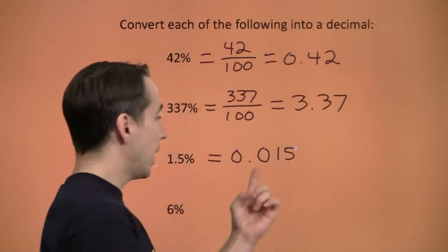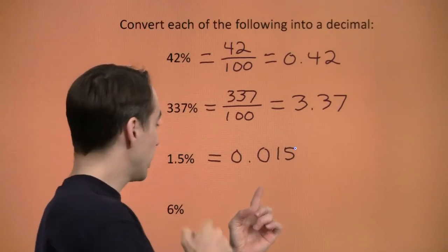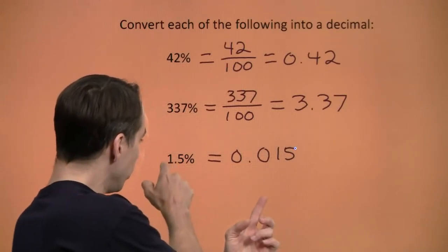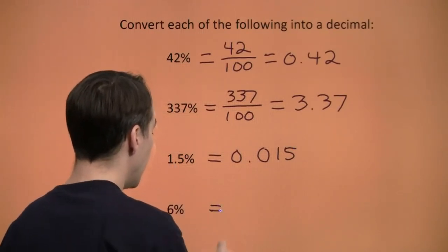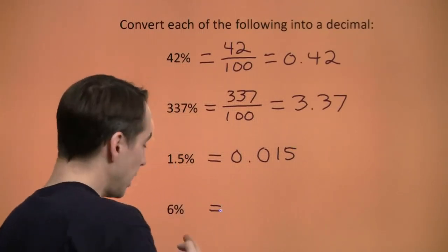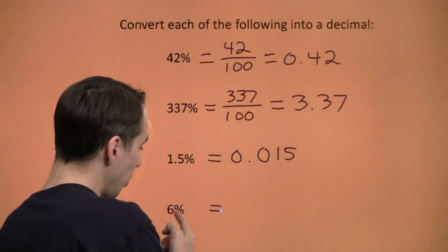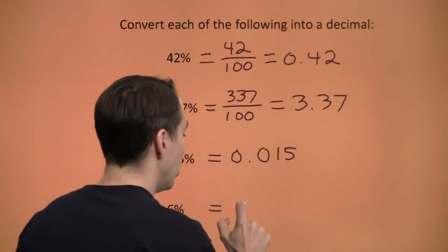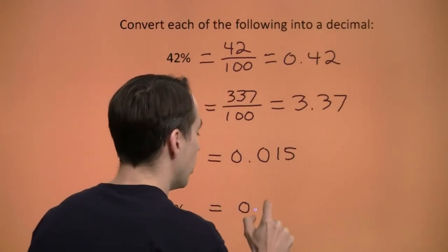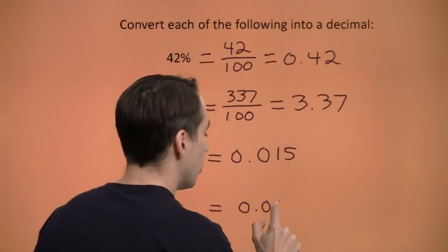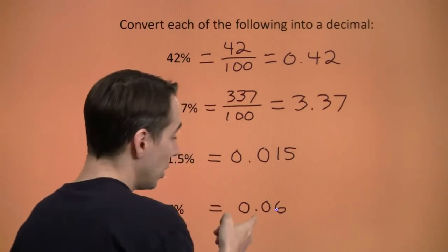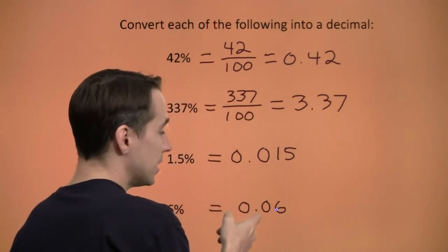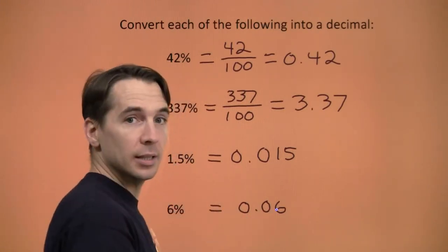Got to remember that zero, because we're moving two places to the left. And our last one is 6 percent — again, we move the decimal point two places to the left. We get 0.06. Not 0.6 — we get 0.06.